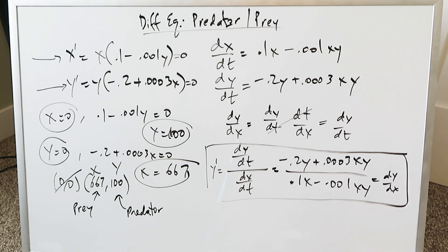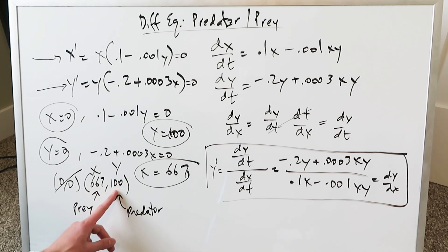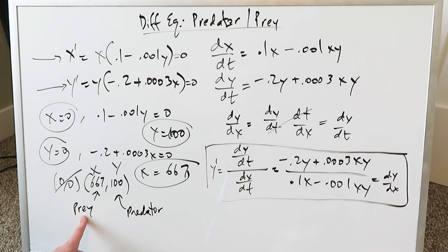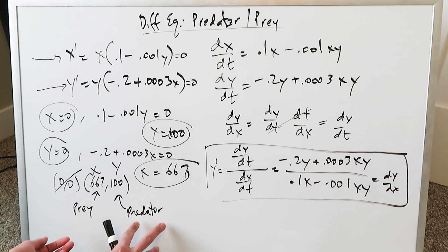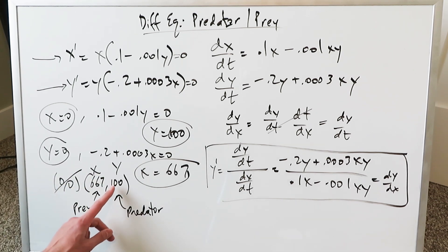Before solving, note that the point (667, 100) represents the equilibrium point. This means the predator-prey system is in equilibrium when there are 667 prey to support 100 predators. If the system is disturbed — say predators decrease — prey will increase; if prey decrease, predators decrease; if prey increase, predator count will likely also increase. This is your equilibrium solution.